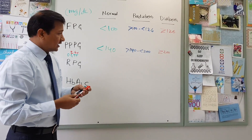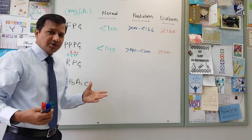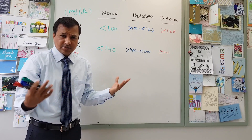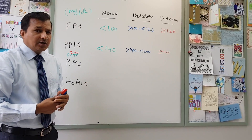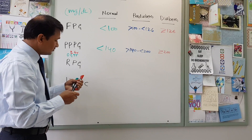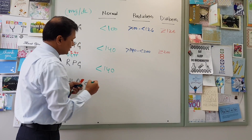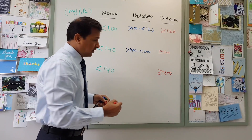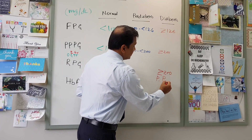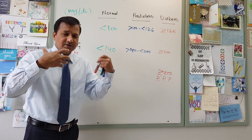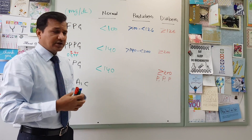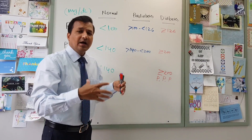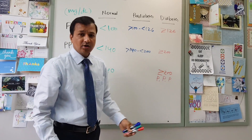Random plasma glucose means the person is not under any dietary control — neither fasting nor post-meal. The person walks in and you measure blood glucose; that is random plasma glucose. A random plasma glucose less than 140 mg/dL is considered normal. If it is greater than or equal to 200 mg/dL along with the three Ps — polyuria (frequent urination), polyphagia (excessive eating), and polydipsia (excessive thirst and water intake) — that is the criterion for diagnosing diabetes mellitus.